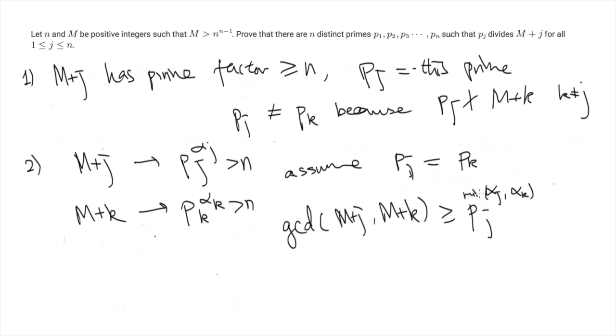Well, it is larger than the Pj to the power minimum of alpha j and alpha k which is larger than n. So this is impossible. So this concludes that all the Pj are different and that's what we need.